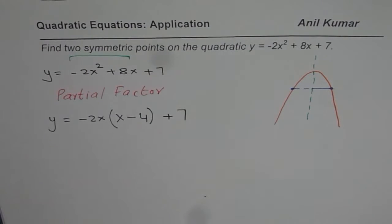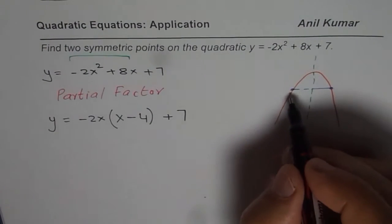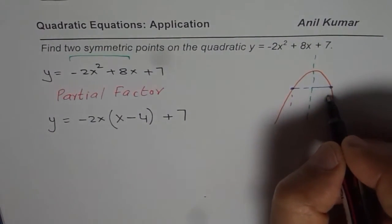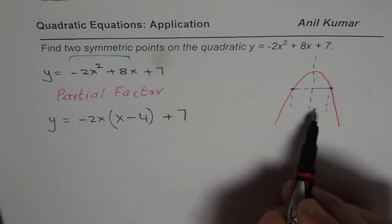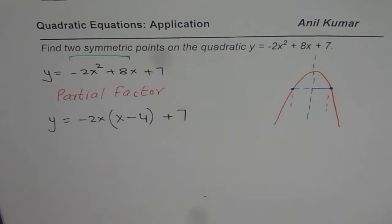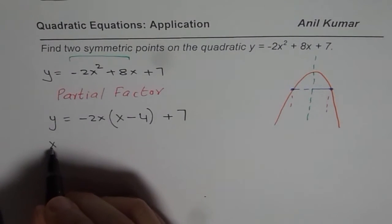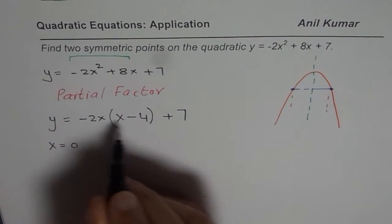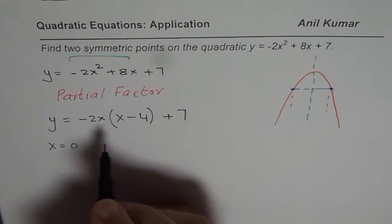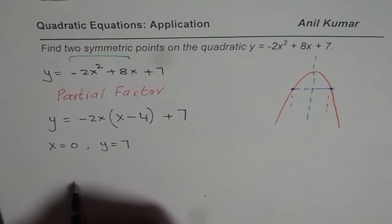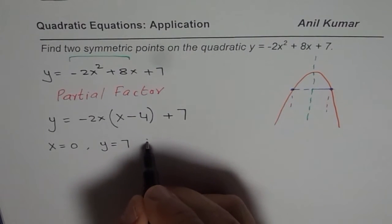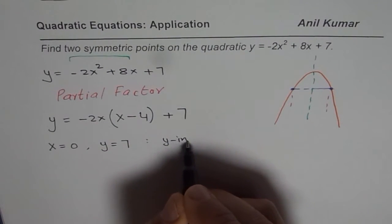Now, what is interesting to note is that these points will have the same height. So they have the same height. Now, if I substitute x = 0, what happens to y? This term becomes 0 and we get y = 7. And that we also say is the y-intercept, right?